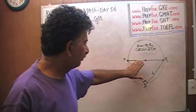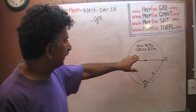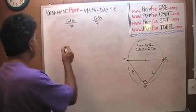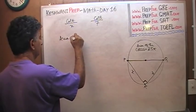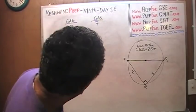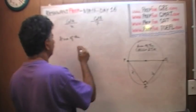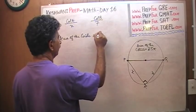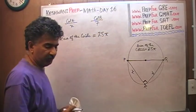The very first thing we have to do is figure out the distance P to Q. We know — we are told — that the area of the circle is 25π. Let's put it here: area of the circle is 25π.